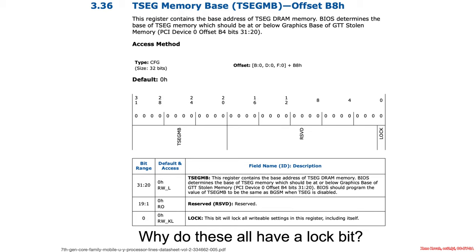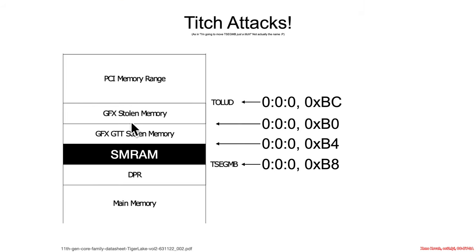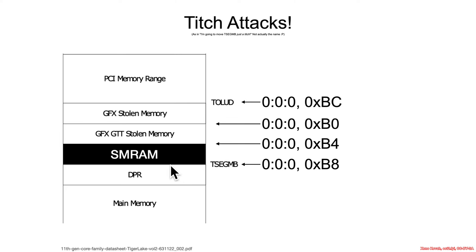Why do all these things have a lock bit? The stuff below Toled is an adjustable range — how much memory needs to be stolen for graphics, how much for SMRAM, and so forth. So when you place TSEG MB at some location, you want to lock it in place. Similarly, you want to place the base of the GTT and then lock it in place.